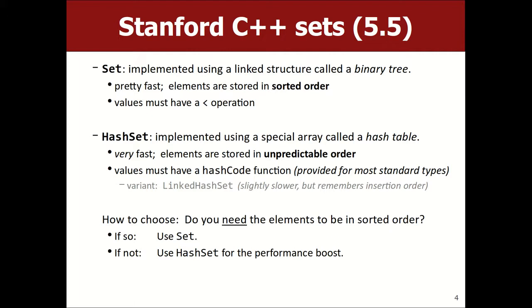There are two kinds of sets in our library. Remember the idea of an abstract data type — more than one way to implement the same operations? There's one called set and one called hash set. The regular set is built using a binary search tree — it's fast and stores elements in sorted order, like alphabetical or numerical order. The hash set is built using an array used in a special way called a hash table. The ordering of a hash set is a bit unpredictable, but it's a little bit faster than a regular set.